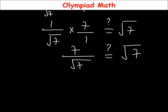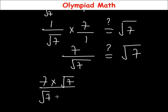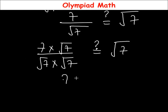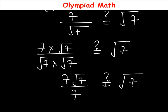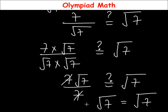To rationalize the denominator, multiply numerator and denominator by √7: (7 times √7) over (√7 times √7) equals 7√7 over √49. √49 equals 7, so we get 7√7 over 7, and 7 divides 7 to give √7 equals √7. We got the correct answer, confirming t equals 1 over 7 is the correct value.